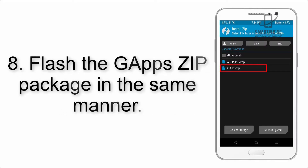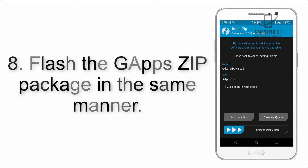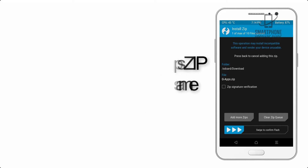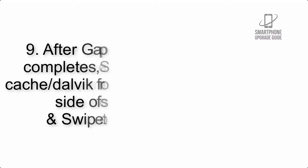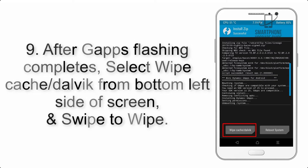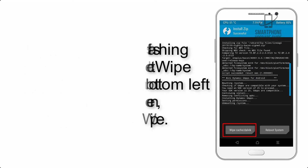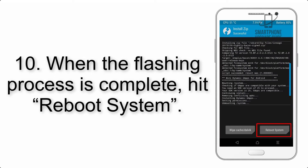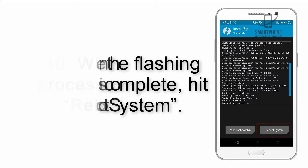Step 8: Flash the GApps zip package in the same manner. Step 9: After GApps flashing completes, select Wipe Cache and Dalvik from the bottom left side of the screen and swipe to wipe. Step 10: When the flashing process is complete, hit Reboot System.